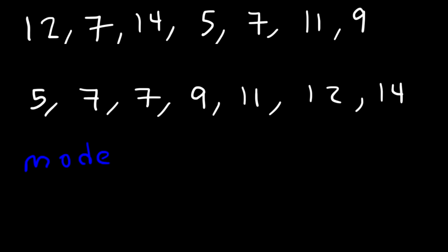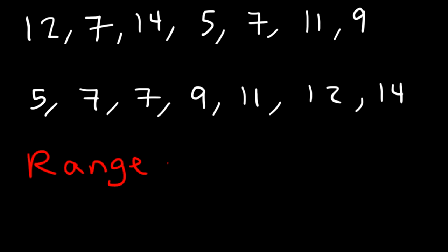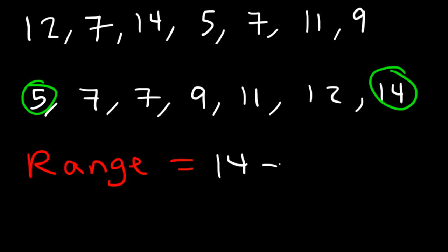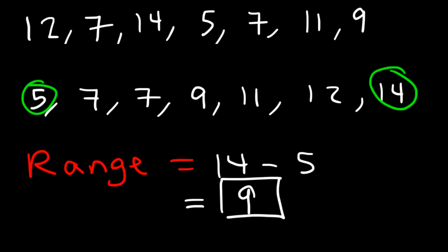Now the last thing that we need to calculate is the range. The range is simply the difference between the highest number and the lowest number. The highest number is 14 and the lowest number is 5. 14 minus 5 is 9, and so 9 is equal to the range.